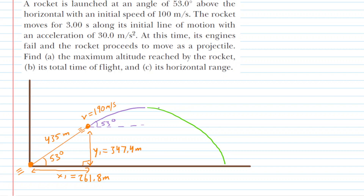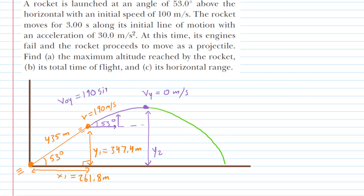Now on to the purple segment of the journey. For the purple segment, when the rocket reaches its peak trajectory at maximum height — which we symbolize as y2 — the velocity in the vertical direction is 0, because when an object reaches max height it momentarily stops vertically. The initial vertical velocity for the purple segment is the y component of 190 meters per second: 190 times sine of 53 degrees, which works out to about 151.7 meters per second.